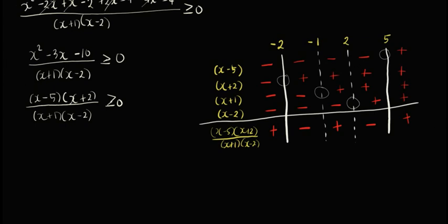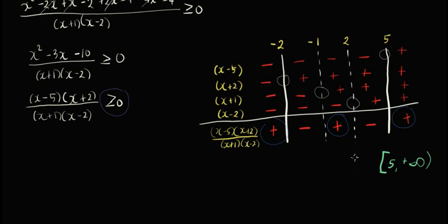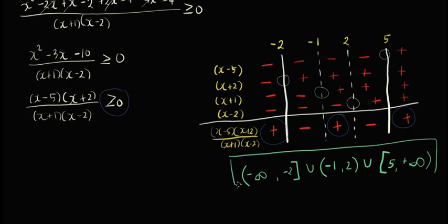So, anong kailangan natin? We will be needing greater than or equal to 0, so ang kailangan natin ay positive. Let's write our final solution in interval notation. Mula 5 kasama si 5, mula 5 hanggang positive infinity. And then si 2 na hindi kasama hanggang kay negative 1 — okay? And then mula kay negative 2, kasama si negative 2, hanggang kay negative infinity. Do not forget the union sign. Okay, that's it. This is your final answer.